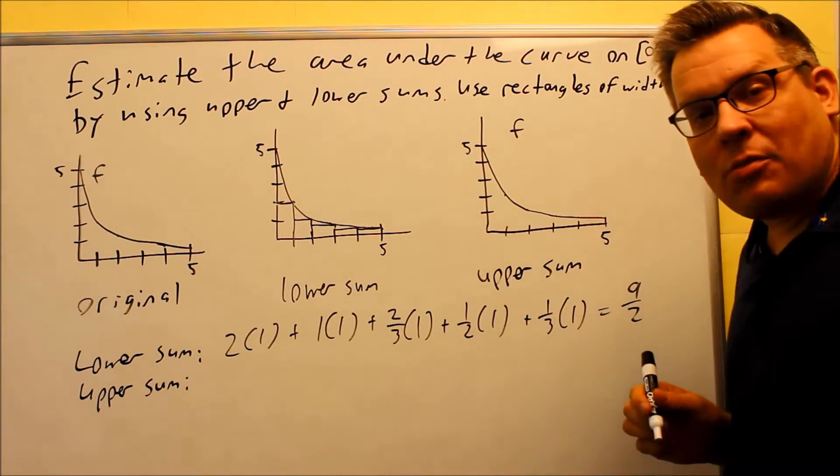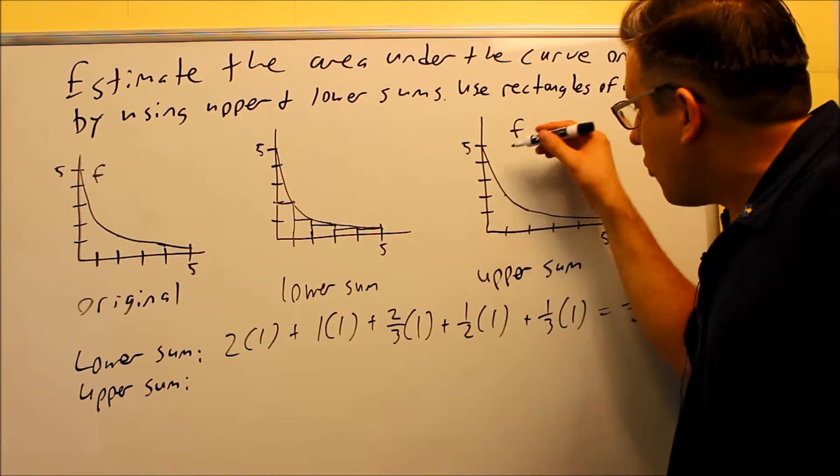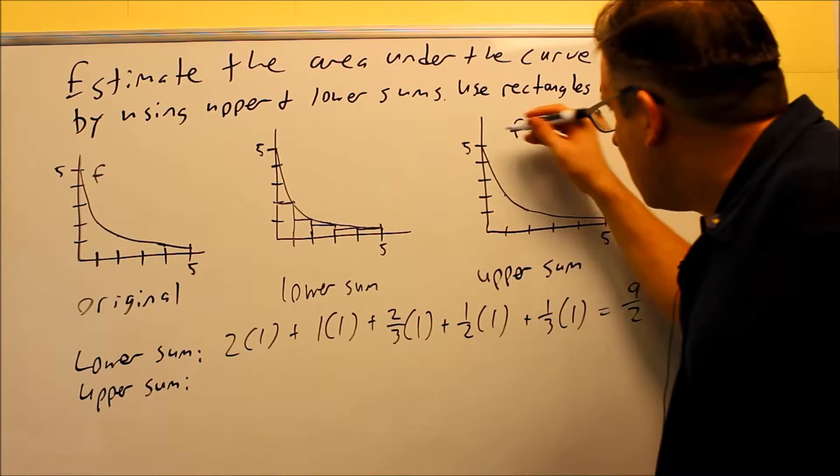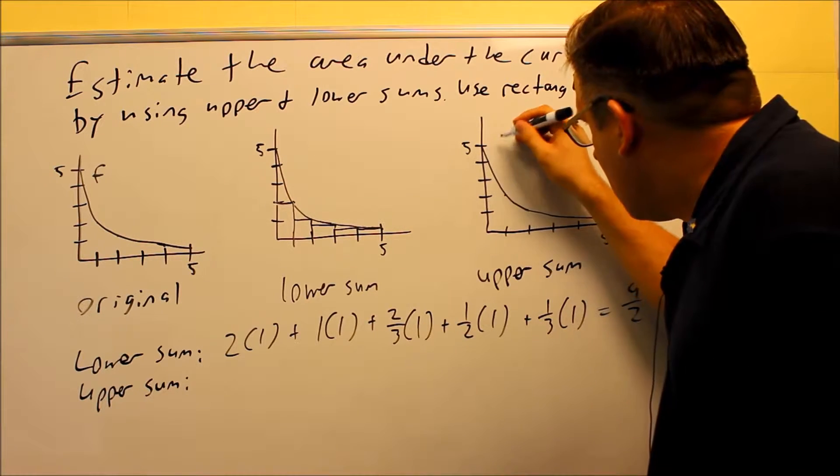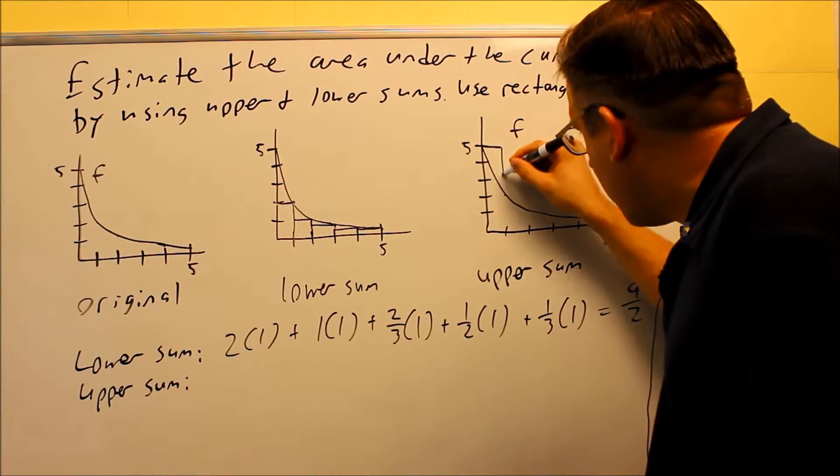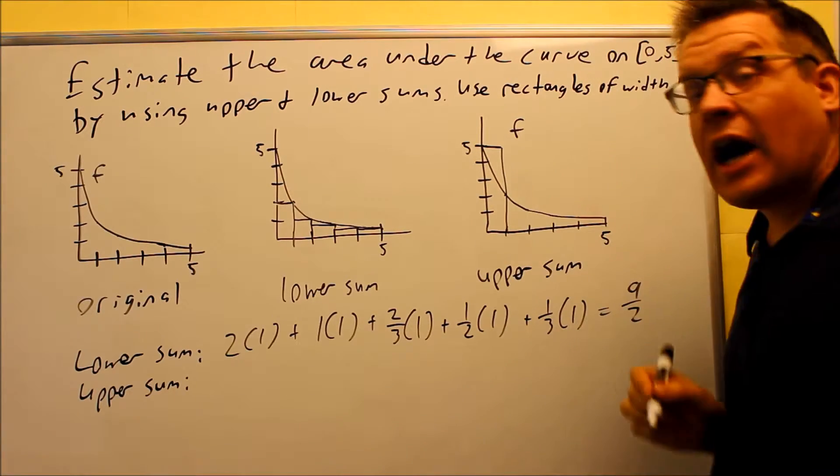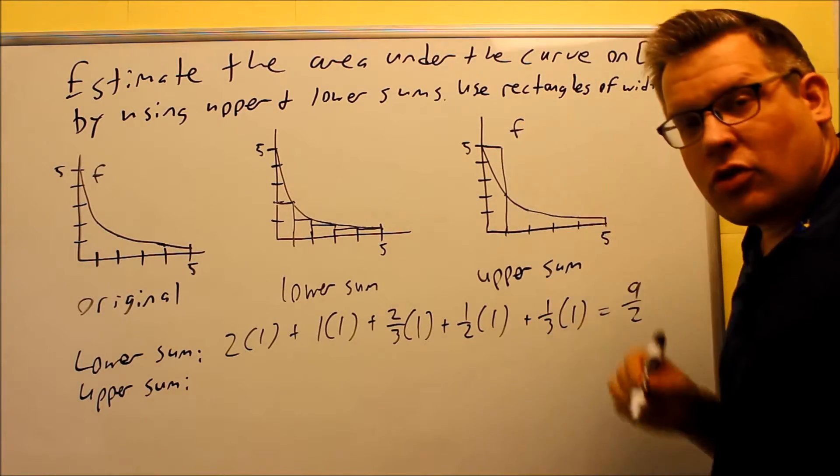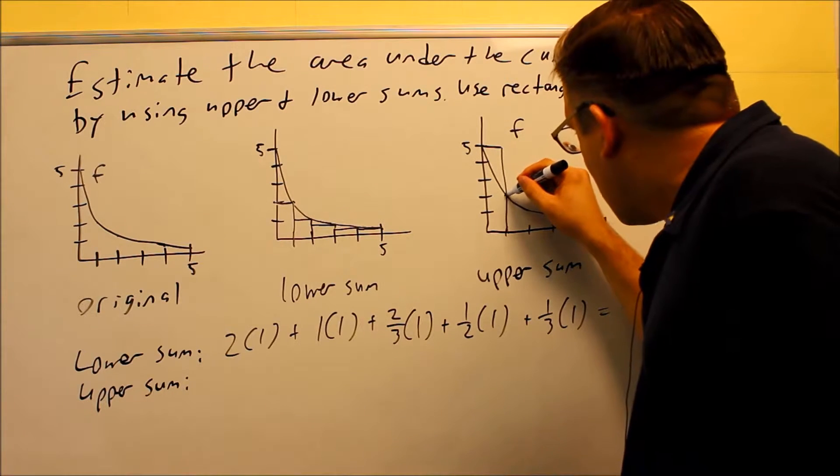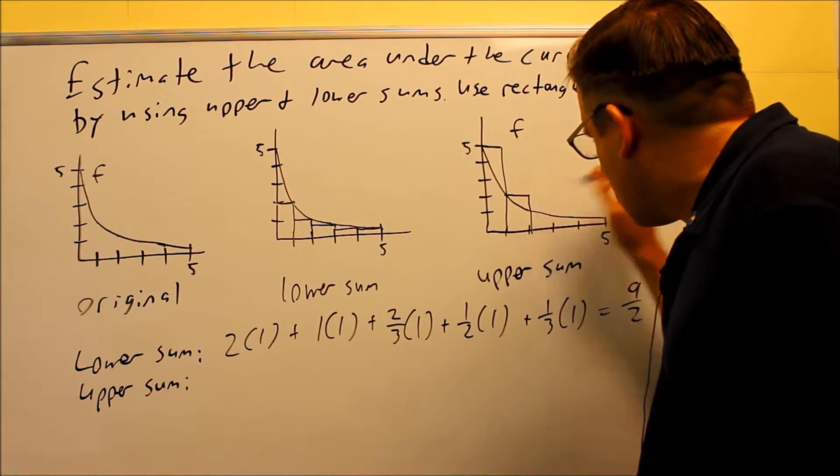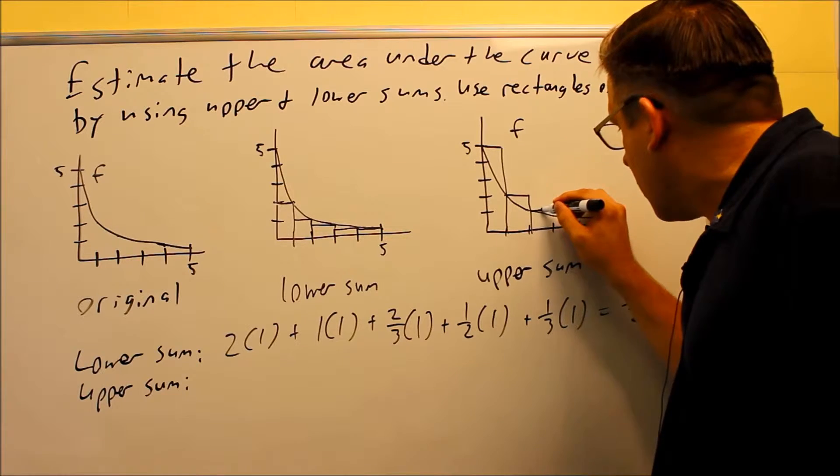Now let's do the same problem again with upper sums. This time rectangles are falling on the outside. So this one, when you draw this rectangle, it's going to go all the way up to 5, so that one's going to go outside of, or above your curve. Here's the next one, next one looks like this, next one goes like that.